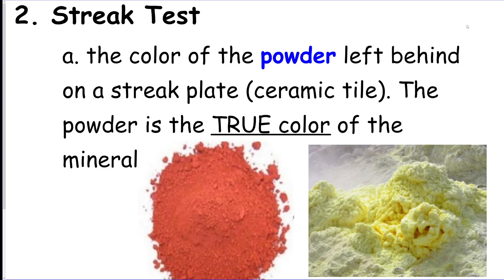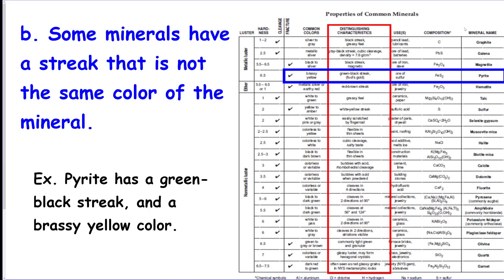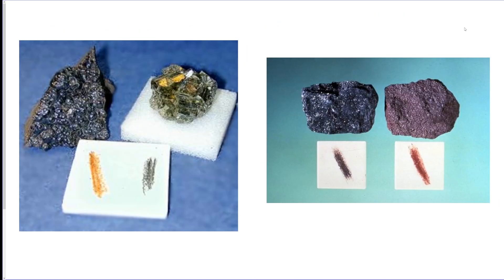The first test we use is the streak test. This is when you take the mineral and put a streak down a ceramic plate, and the powder that comes off is the true color of the mineral. Some minerals have a streak that's not the same color as the actual mineral — the powder on the plate reveals the real color, not the surface color of the mineral.